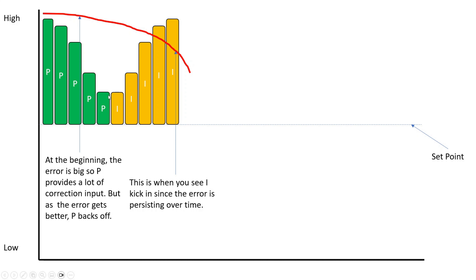As proportional tapers off over time, integral does the opposite — it becomes more important over time. We have this lingering error, and the integral can't stand a persistent lingering error. It just becomes more and more aggressive and heavy-handed over time.